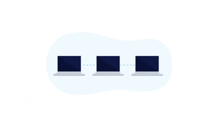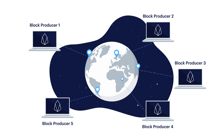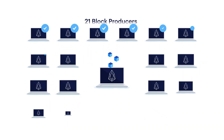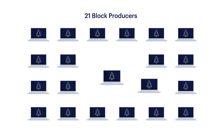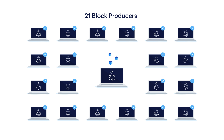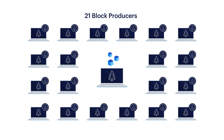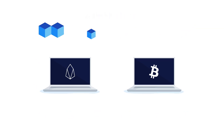On EOSIO, the computers that run the network are called block producers. Many block producers are full-time professional teams running enterprise-scale hardware. On EOS specifically, the 21 block producers that get the most votes are delegated to run the network. Each block producer takes a turn validating transactions and producing blocks, which are then checked by the other 20 block producers. The block producers are then rewarded with EOS tokens for running the network properly.